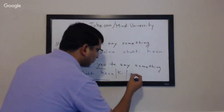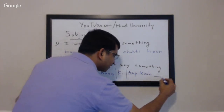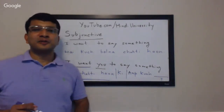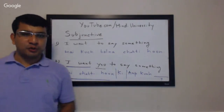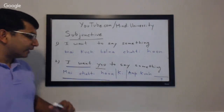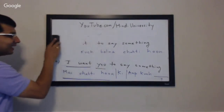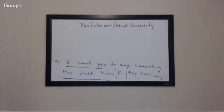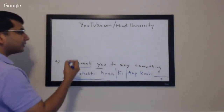Then you said 'tum kuch bolo' or 'tum kuch bolna.' You said 'tum' or more formally 'aap,' then 'kuch,' and then this last part is the question mark — that's called the subjunctive word. The key question is: what form of the verb will you be using at the end? That's what this class is about — how do you say the subjunctive form of the verb.